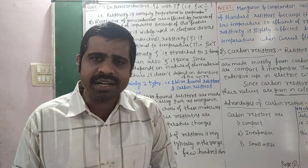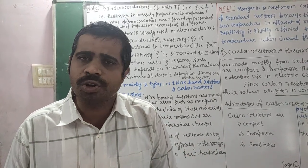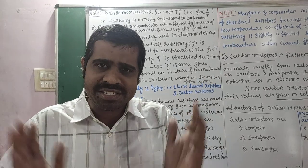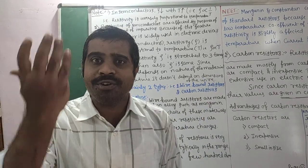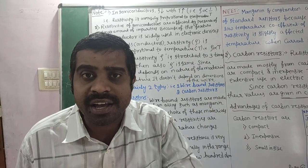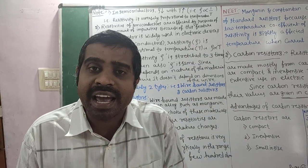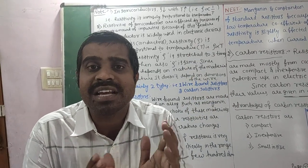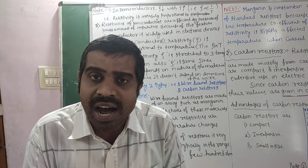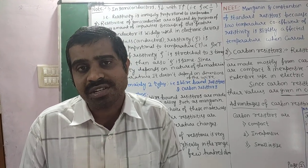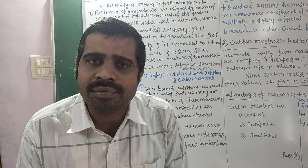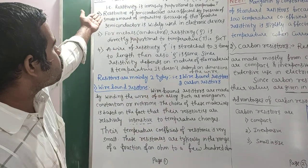For any semiconductor — germanium or silicon — if you go from 40°C to 70°C, temperature is increasing. In that material, resistivity decreases and hence conductivity increases, because resistivity and conductivity are reciprocals of each other. Resistivity of semiconductors is also affected by the presence of small amounts of impurities, which is why semiconductors are widely used in electronic devices.